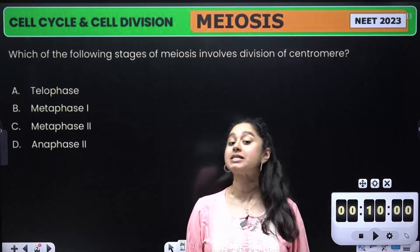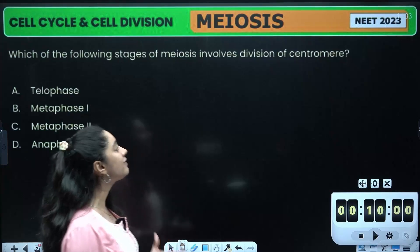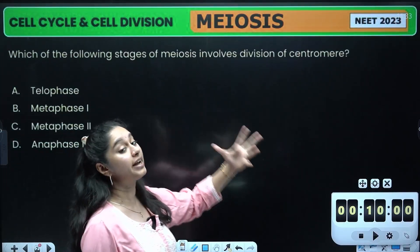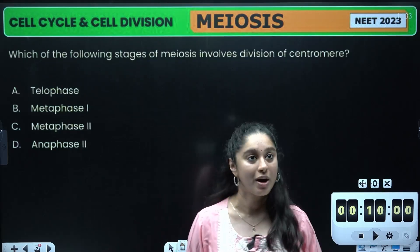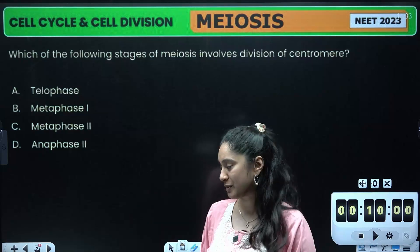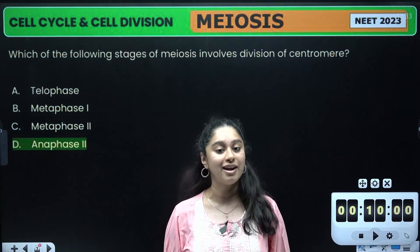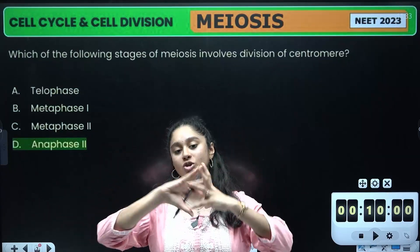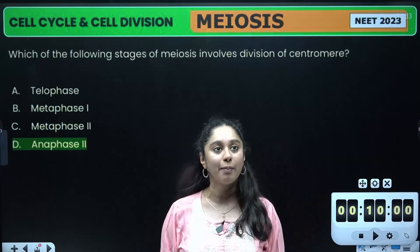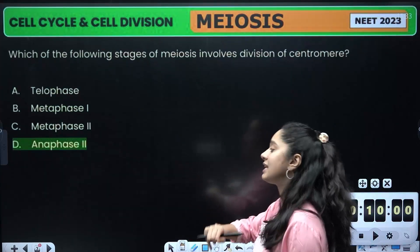In the previous episode we talked about meiosis, and I asked you: division of centromere — what stage will it happen? The answer is D, which is Anaphase II. In Anaphase II, our sister chromatids have centromere attached, and that separation is happening only in the Anaphase II stage. So option D is the right answer.